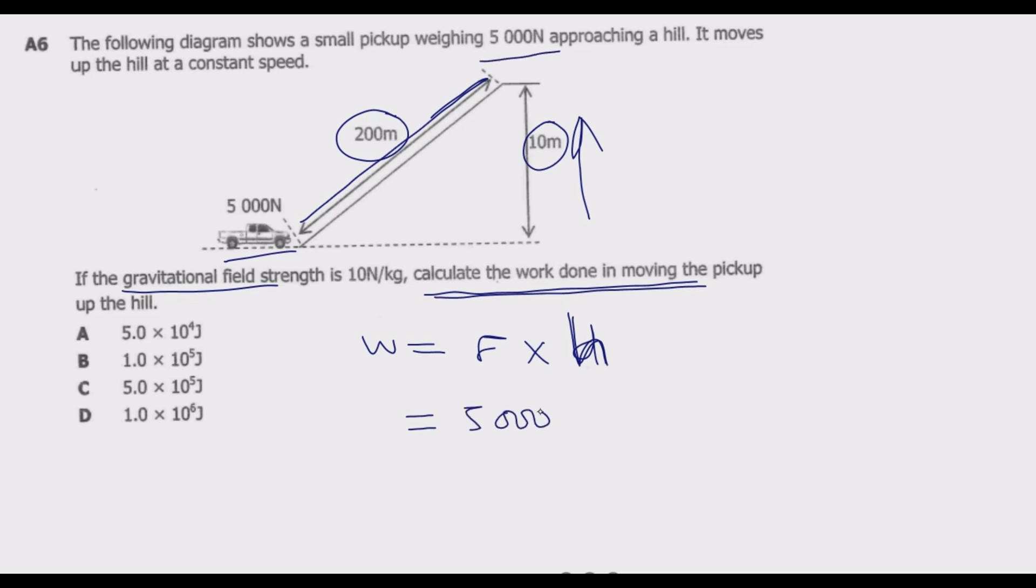So we are going to end up with 10 meters, so 5,000 times 10, we end up with 50,000 joules. Then this must be given in standard form. So we move the decimal point in this one place: 1, 2, 3, 4. So it's going to end up with 5.0 multiplied by 10 to the power 4 joules. This is the answer.